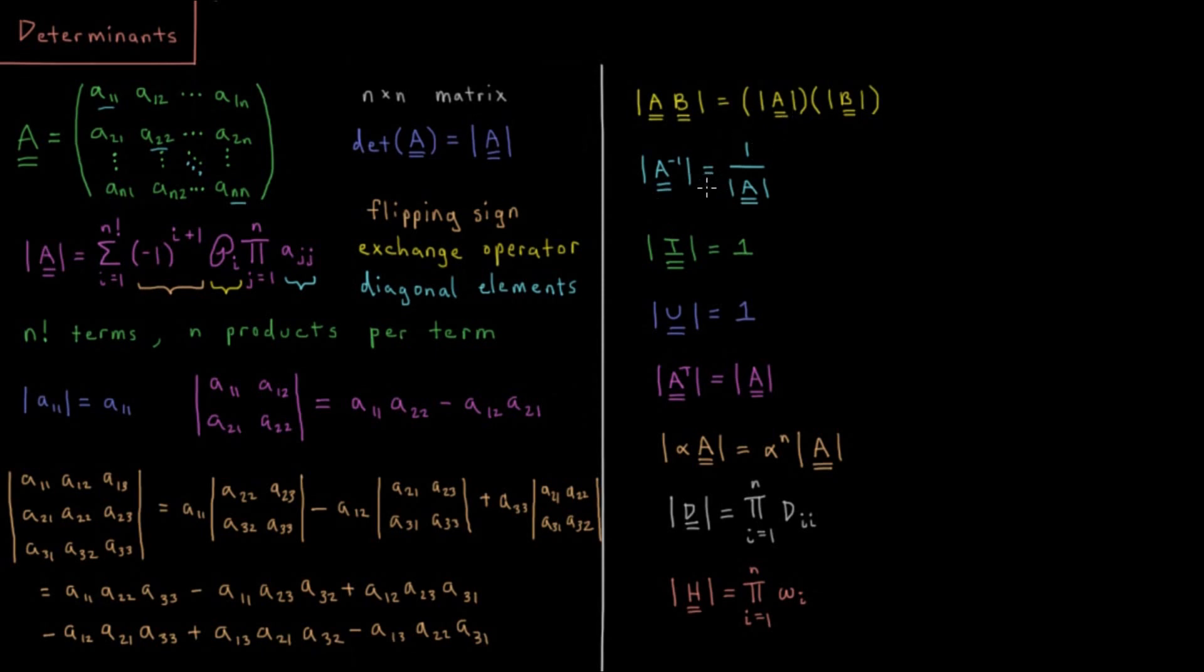So some interesting properties of determinants. The determinant of a product, or the determinant of multiplying two matrices together, the product of A and B, is the determinant of A times the determinant of B, because all of these are scalar values. So by the time you do all the multiplications and additions, you do get a single number. And that number is sort of like an effective magnitude of the matrix, sort of, sort of not, but we can think of it a little bit as in terms of a magnitude of the matrix. So the magnitude of the product is just a product of the magnitudes.